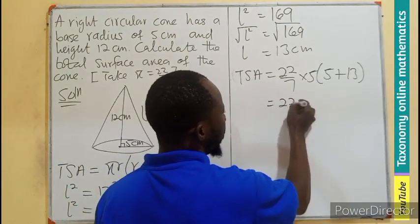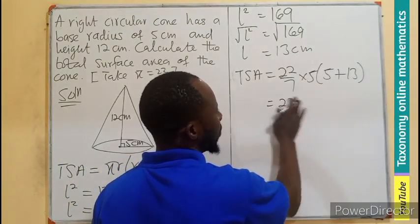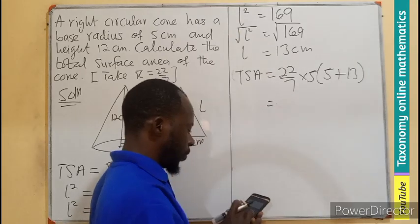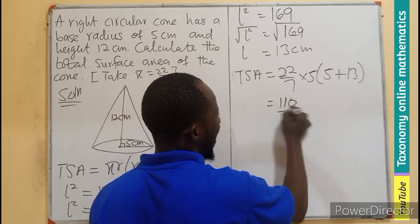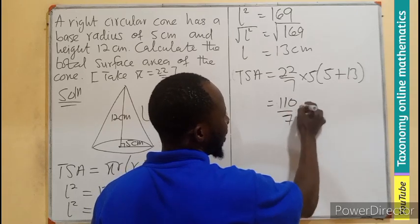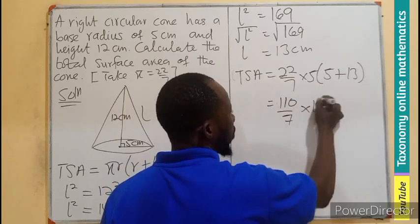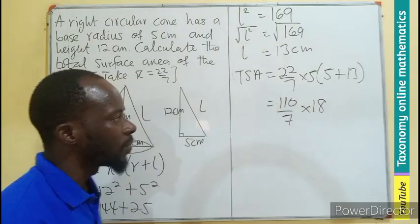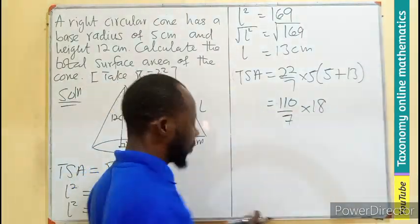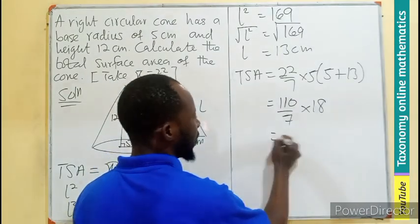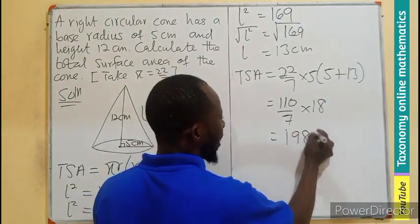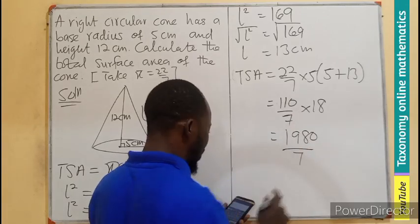So this is going to mean 22 times 5, and now it will give us 110 divided by 7 times, if you add this, you also get 18. So now 18 times, and now it will give us 1980 divided by 7.